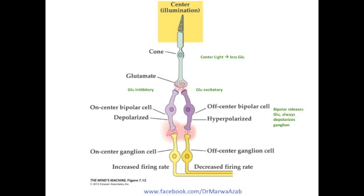All the cells we talked about, except for the ganglion cell, are not capable of producing or firing action potentials. They do graded potentials that scale up and down in proportion to the amount of glutamate released. The only cell capable of action potentials at the retinal level is the ganglion cell. Both the on-center ganglion cell and the off-center ganglion cell are both excited by glutamate, meaning increasing glutamate will result in increased firing rates in both the on-center and the off-center cell.